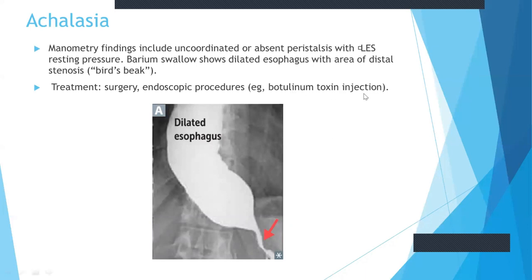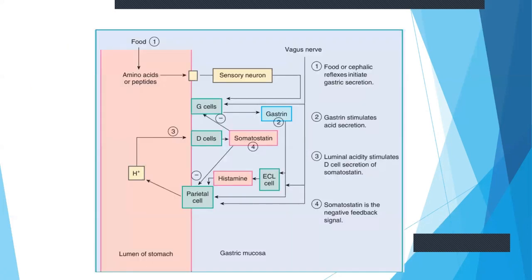This concept is also important and can be asked in surgery or gastric questions. Now let's revise gastric acid production. When we smell food, it contains amino acids and peptides, which stimulate sensory neurons. The vagus nerve is stimulated and stimulates G-cells, which produce gastrin. Gastrin stimulates enterochromaffin-like cells and parietal cells. Enterochromaffin-like cells produce histamine, and parietal cells release acid. When acid is released, it stimulates D-cells, which release somatostatin, which then inhibits G-cells and parietal cells, balancing acid secretion through negative feedback.